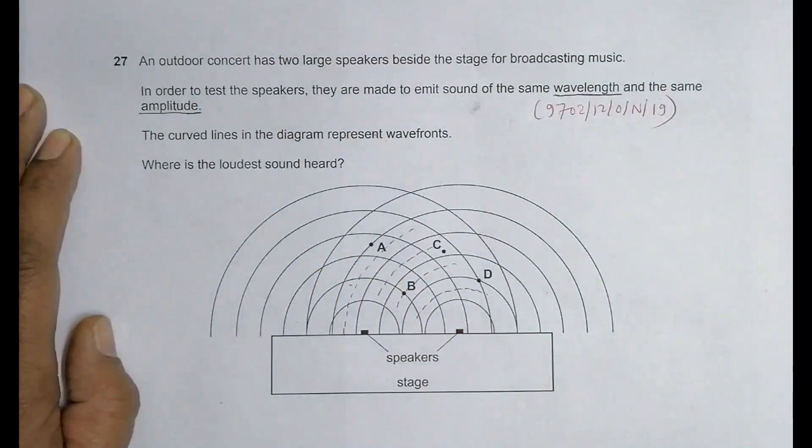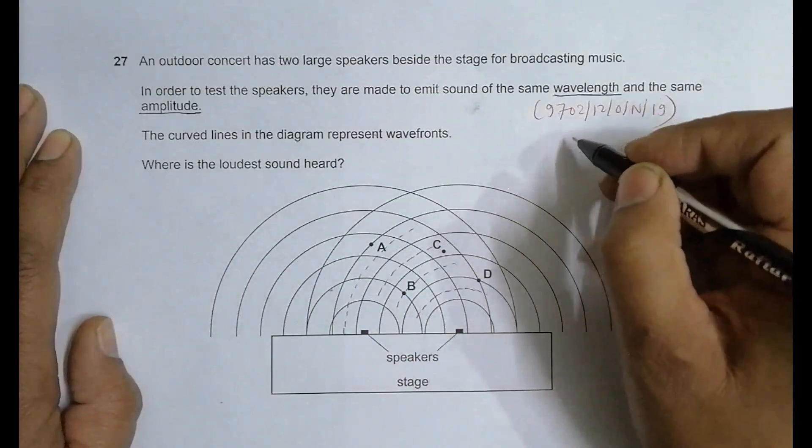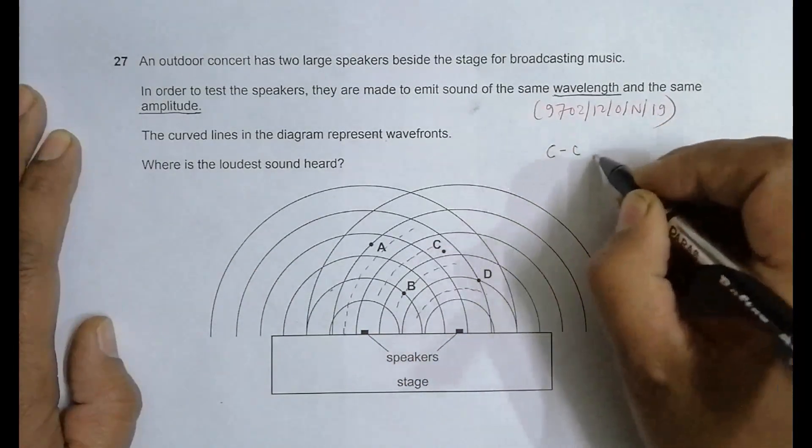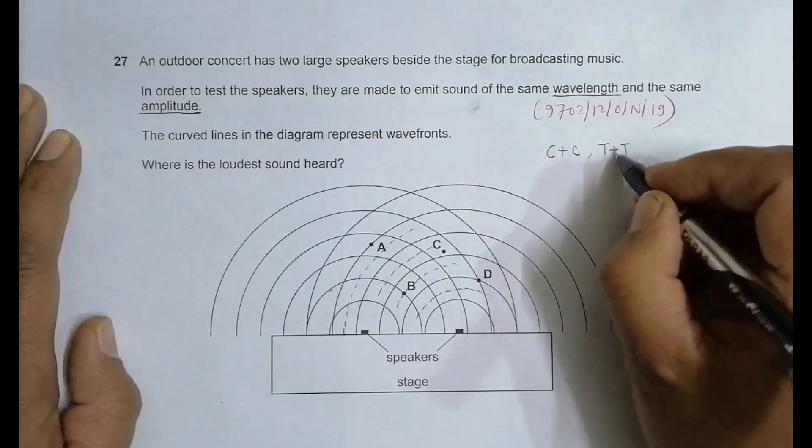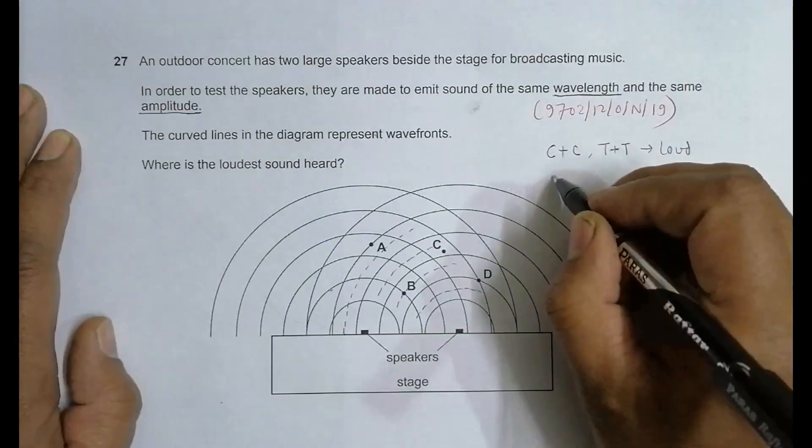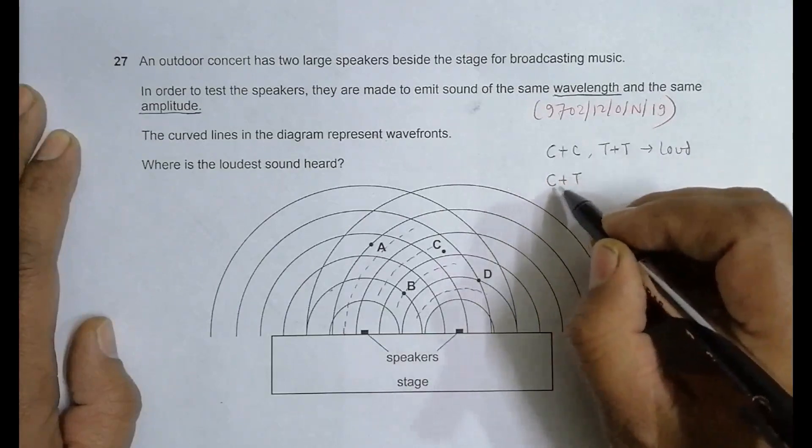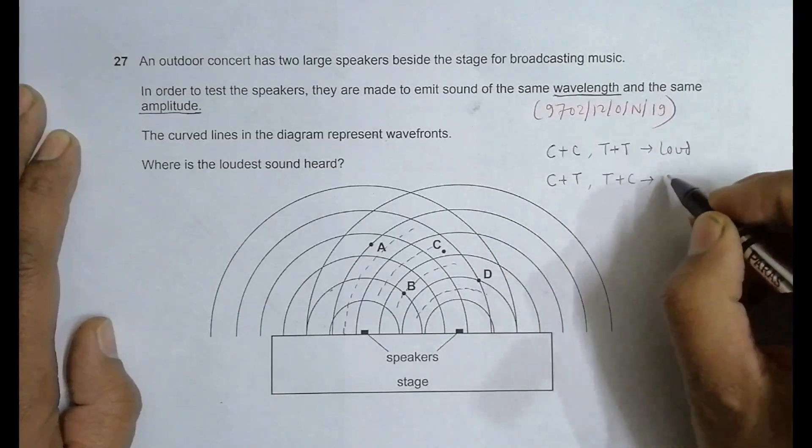Where is the loudest sound heard? We have to determine the position where loudest sound is heard. Loudest sound means that the amplitude should be high. Amplitude will be high at those locations where the crest overlaps with crest or a trough with trough. So here it will be loud or amplitude high.